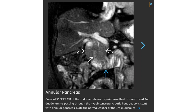This is a T1-weighted fat-saturated MRI showing hypointense fluid in a narrowed second portion of the duodenum passing through the hypointense pancreatic head, consistent with annular pancreas. Note the normal caliber of the third portion of the duodenum.